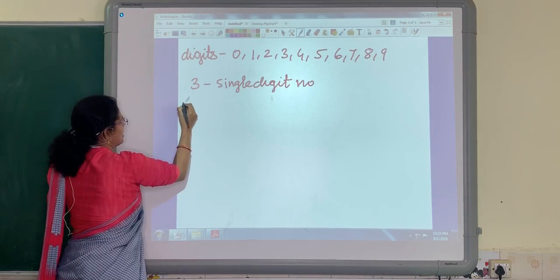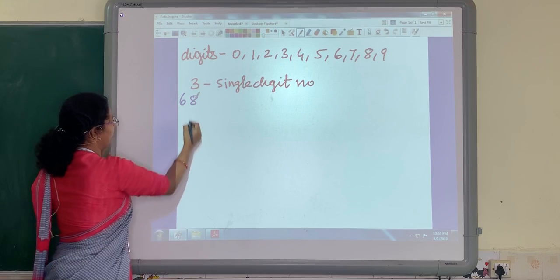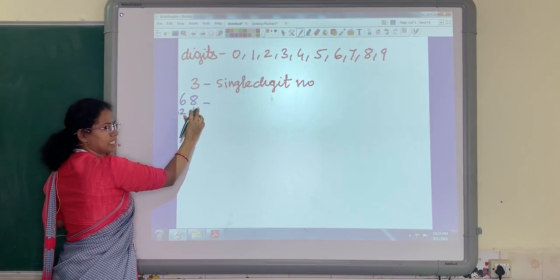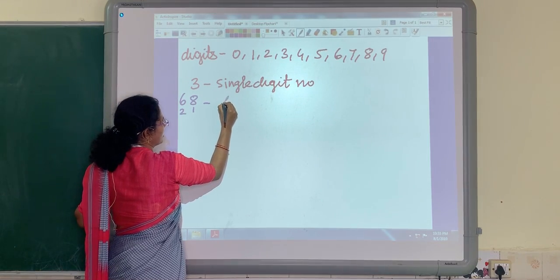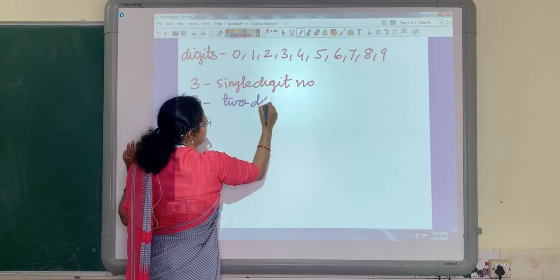Let's say another example: 68. How many digits are there? 1, 2. There are 2 digits in number 68. So number 68 is a 2 digit number.